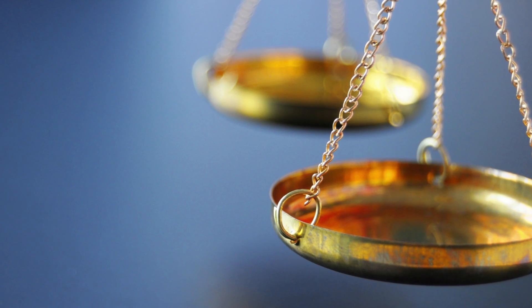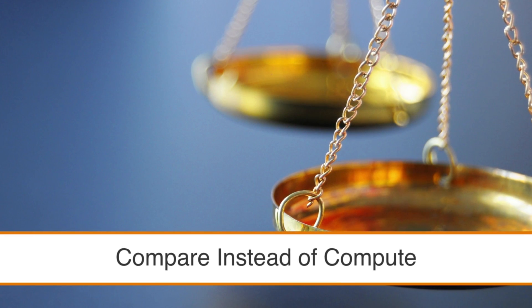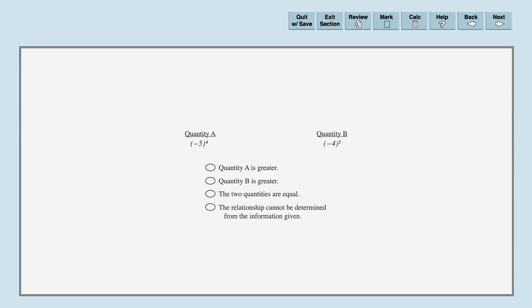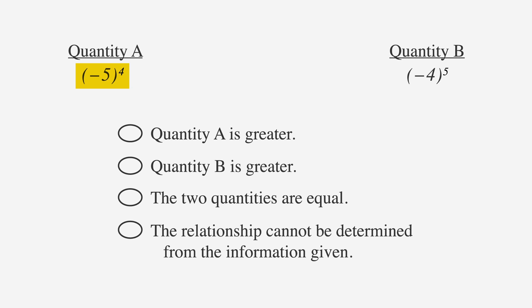Another strategy to apply to QCs is to compare instead of compute. Let's look at an example. In column A, we have a negative number taken to an even exponent. And in column B, we have a negative number taken to an odd exponent.